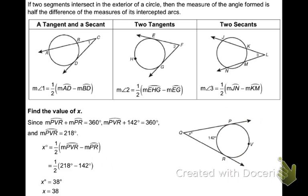Next thing we're going to talk about is the two segments intersecting the exterior of a circle. Up to this point, all of our intersections and angles have been on the inside. Now we're talking about intersections on the outside. And the measure of the angle formed is half the difference of the measures of its intercepted arcs. So what that means here is, every one of these, doesn't matter what type of lines they are, if your angles are on the outside, now you're going to take half of the difference of the arcs.